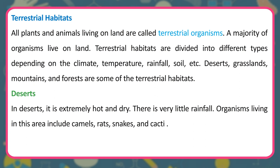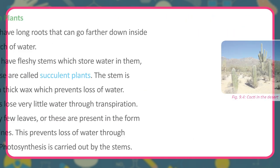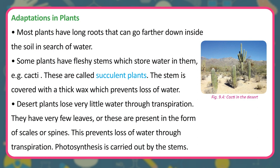In deserts, it is extremely hot and dry with very little rainfall. Organisms found here include camels, rats, snakes, and cacti. Adaptations in plants: most plants have long roots to reach water deep in the soil. Some plants like cacti have fleshy stems that store water — these are called succulent plants. The stem is covered with thick wax to prevent water loss. Desert plants have very few leaves, or leaves are present as scales or spines, preventing water loss through transpiration. Photosynthesis is carried out by the stems.